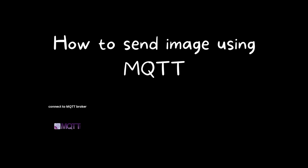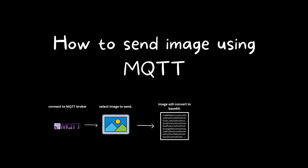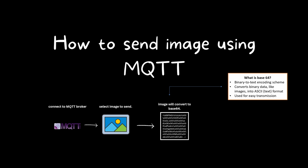Our journey begins with connecting to an MQTT broker, followed by selecting or reading an image. Then we will convert the image into Base64 format. Base64 is a binary-to-text encoding scheme commonly used to represent binary data in text format. It is used to encode binary data such as images into a format that can be easily transmitted over text-based protocols or stored as text. Finally, we will publish the Base64 data to the desired topic for image transmission.